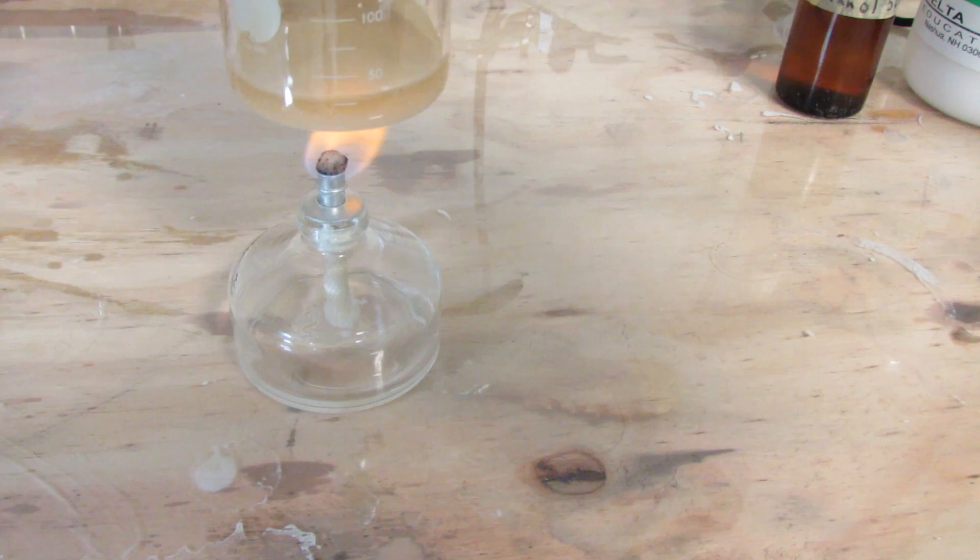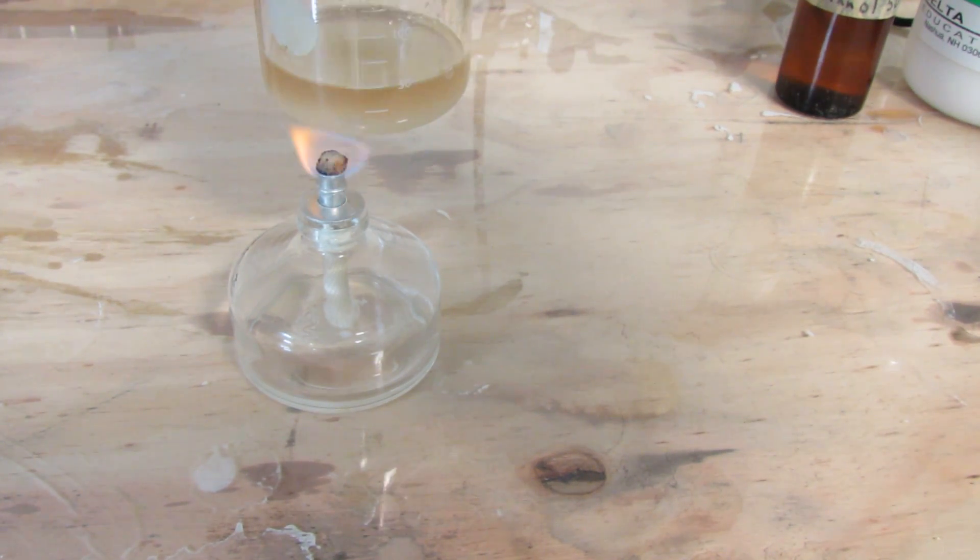Now the pale yellow color of diethyl-1,3-acetone-dicarboxylate is apparent. This gives us a little more reassurance that we have actually created this chemical.